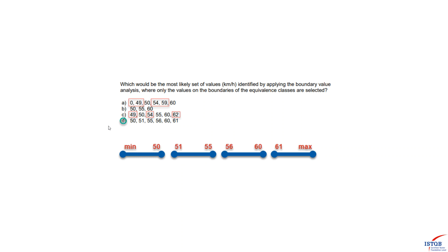The most important thing in boundary value analysis is to accurately define partitions first. To define a partition you need to understand where it starts and where it ends, and to do that you need to define the min and max values — in 90% of cases those values are the boundary values. Hope this video helps you pass the exam. Share your thoughts in the comments, and see you in the next lecture.